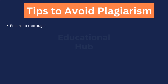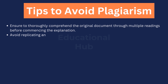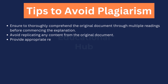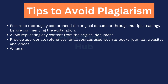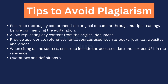Tips to avoid plagiarism. 1. Ensure to thoroughly comprehend the original document through multiple readings before commencing the explanation. 2. Avoid replicating any content from the original document. 3. Provide appropriate references for all sources used, such as books, journals, websites, and videos. 4. When citing online sources, ensure to include the accessed date and correct URL in the reference. 5. Quotations and definitions should be cited verbatim without any alterations.